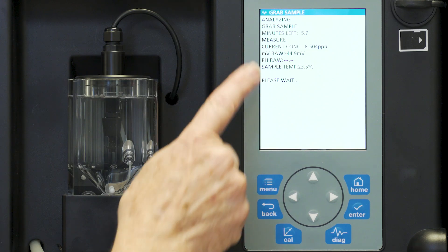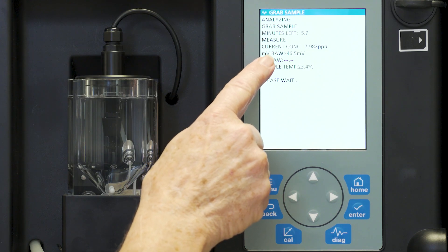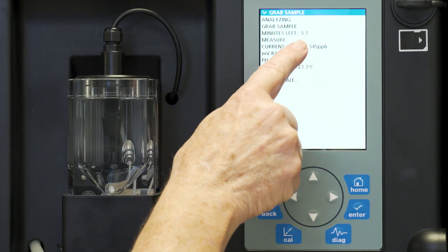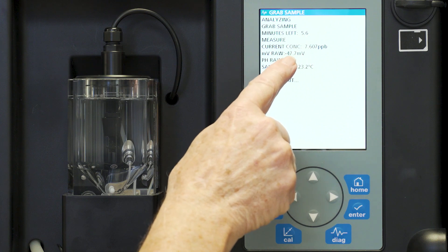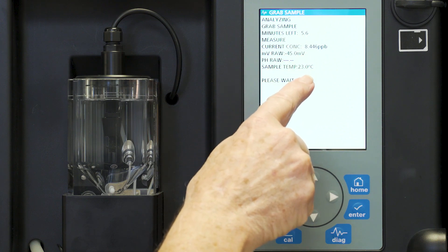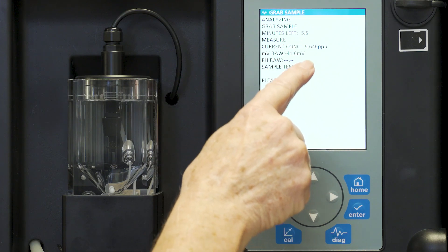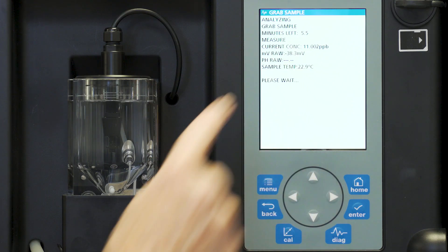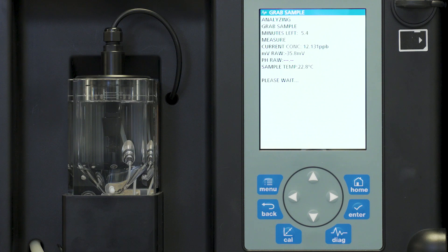We're now getting a live reading. It shows us there's 5.7 minutes left to read the sample but it is showing our current concentration and our raw millivolt reading and sample temperature. At the end of the five minutes it then will give us our locked in reading of what our actual grab sample measurement was.